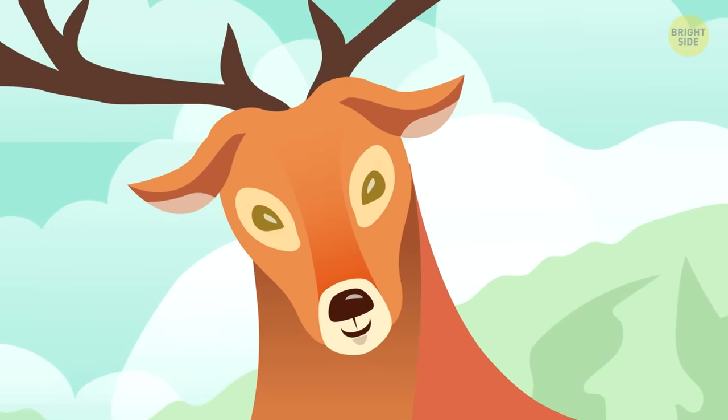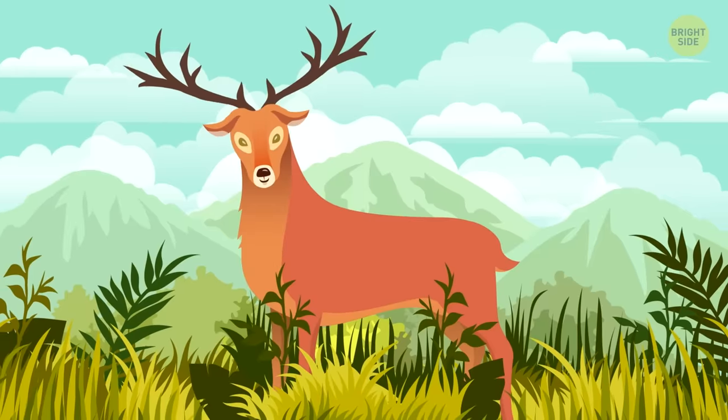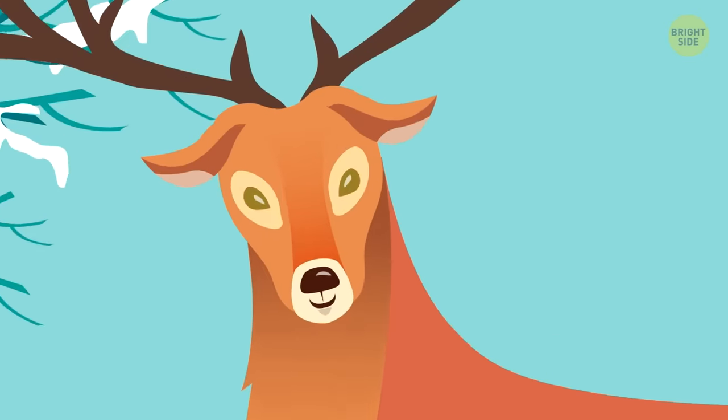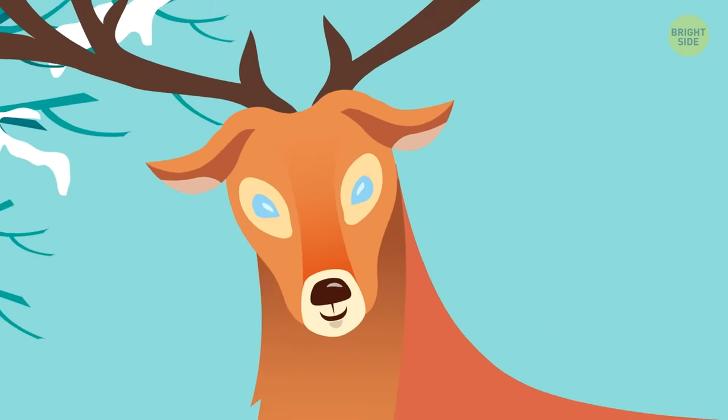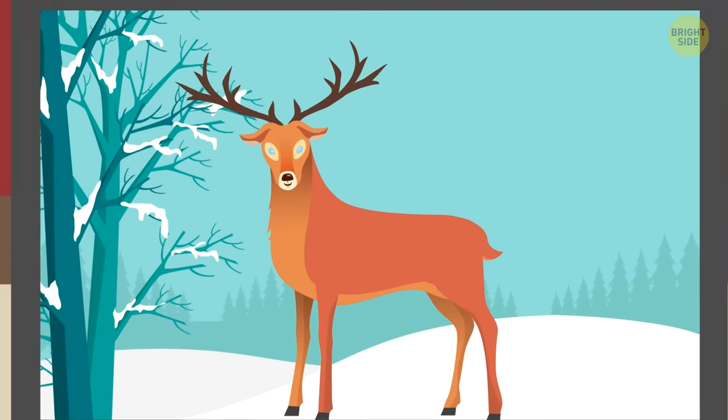A reindeer's eyes change color from gold in the summer to baby blue in the winter. They don't care. Such a color shift improves the animal's vision because it influences the way the light gets reflected through the retina.